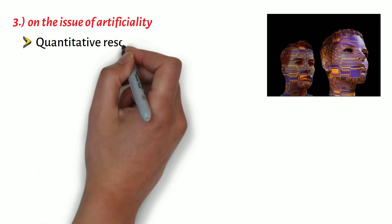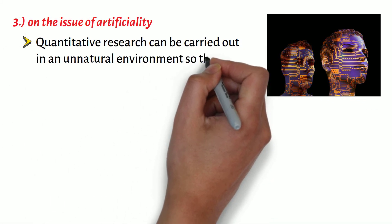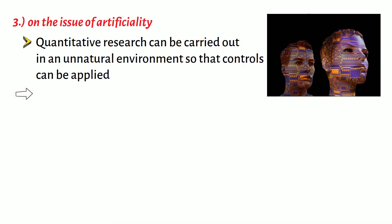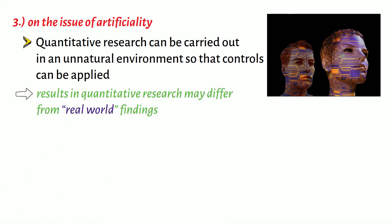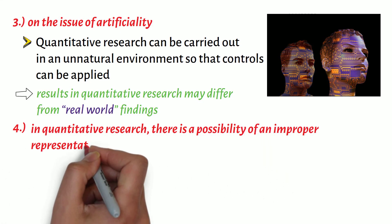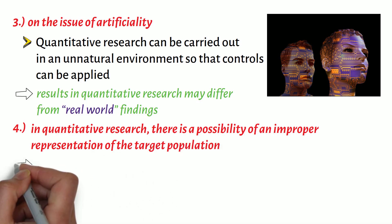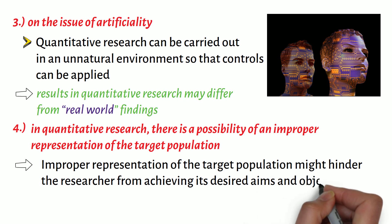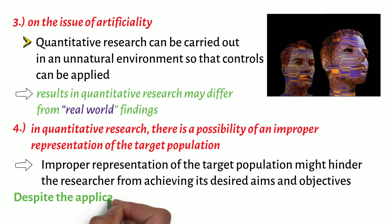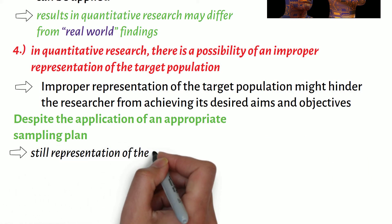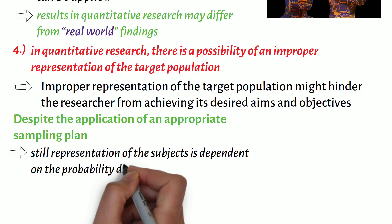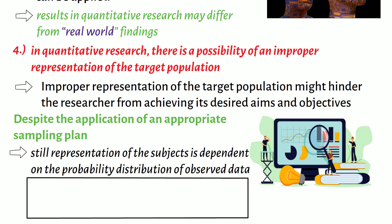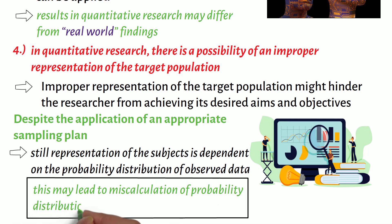Third is on the issue of artificiality. Quantitative research can be carried out in an unnatural environment so that controls can be applied. This means that results in quantitative research may differ from real-world findings. Fourth is that in quantitative research, there is a possibility of an improper representation of the target population. Improper representation of the target population might hinder the researcher from achieving its desired aims and objectives. Despite the application of an appropriate sampling plan, still representation of the subjects is dependent on the probability distribution of observed data. This may lead to miscalculation of probability distribution and falsity in proposition.